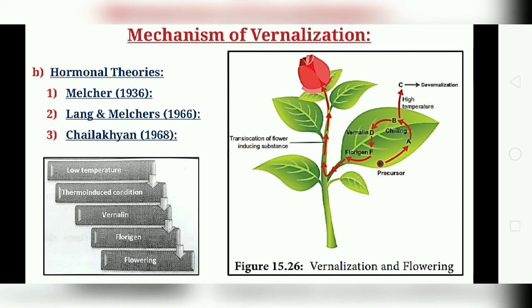The next mechanism is the Hormonal Theory. Mackler in 1936 performed a grafting experiment of a vernalized plant with an unvernalized one and observed flowering. This clearly indicates that some type of hormone is synthesized in the vernalized plant, which is translocated through grafting and results in flowering. On the basis of this experiment, Lank and Mackler in 1966 postulated the presence of a flowering hormone called vernaline.